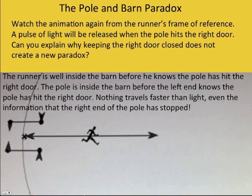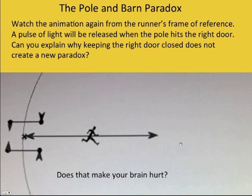Nothing can travel faster than light, not even the information the right end of the pole has stopped. And actually that information is going more at the speed of sound. And so the runner is not going to know the pole hit the door until he splats on it pretty much himself. And so the paradox is resolved. One thing that might help you think about this, the pole is mostly empty space. And so it's not really a continuous solid object. That's just an illusion. And so when this end hits, it doesn't mean this end instantly knows the fastest that information could travel is the speed of light. In reality, it's going to travel slower than that. So does that make your brain hurt?